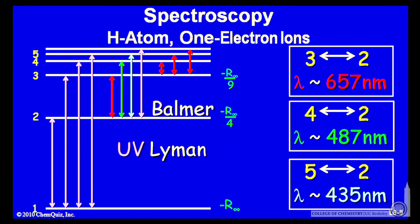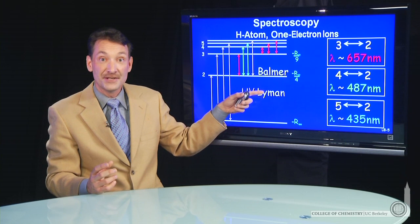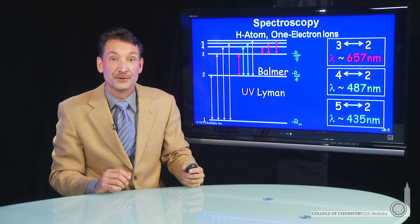These various bands of emission have been given names over the past. The ultraviolet Lyman series of lines or the Balmer series of lines, those ending or starting in n equals 2.